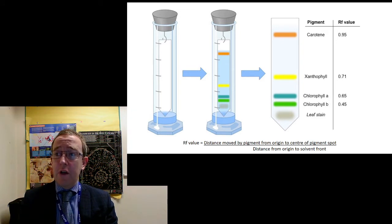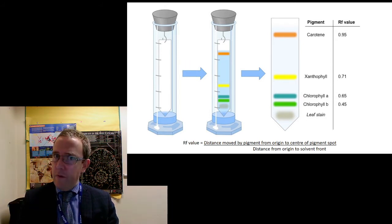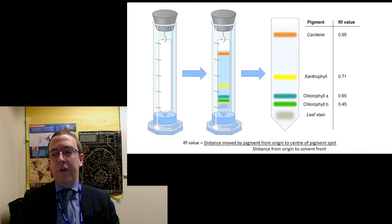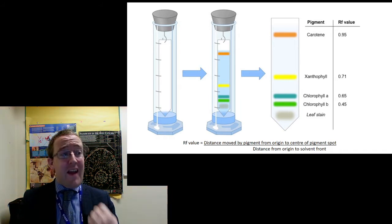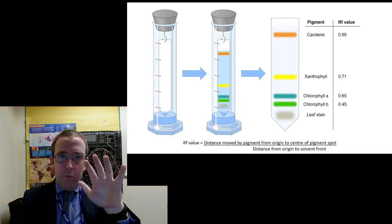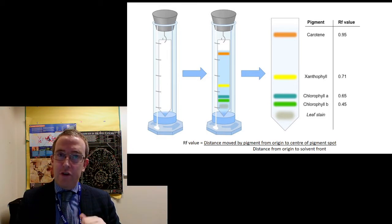Keratin usually comes out first with an RF value of 0.95, so it runs about 95% the way, the distance of the solvent. Very, very soluble in most organic solvents. And then xanthophyll, chlorophyll A, chlorophyll B. They're never that clean. They're always kind of blurring in together. You've got to use a little bit of intuition to find them.